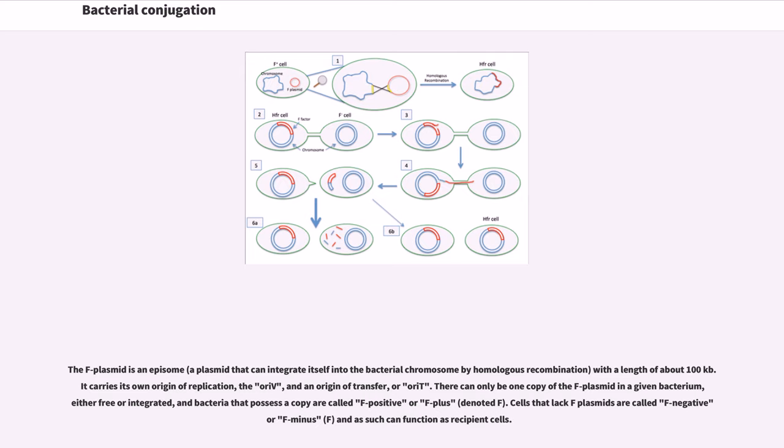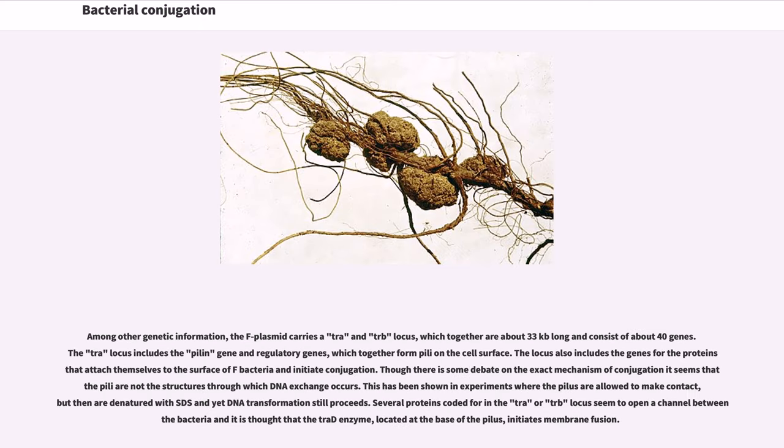There can only be one copy of the F-plasmid in a given bacterium, either free or integrated, and bacteria that possess a copy are called F-positive or F+. Cells that lack F-plasmids are called F-negative or F-, and as such can function as recipient cells.